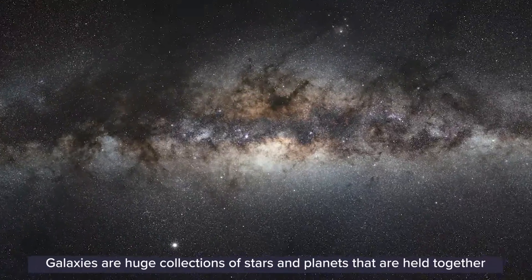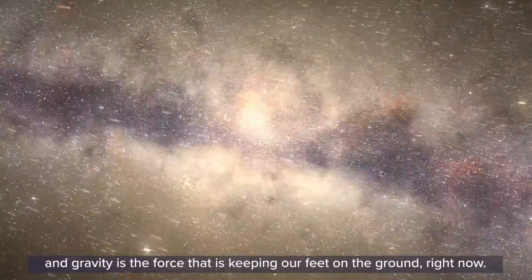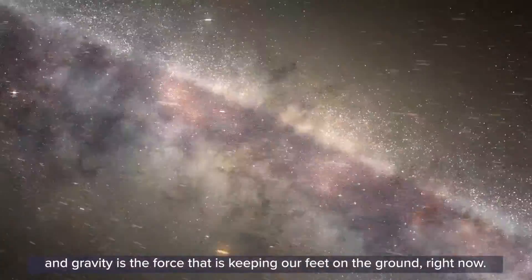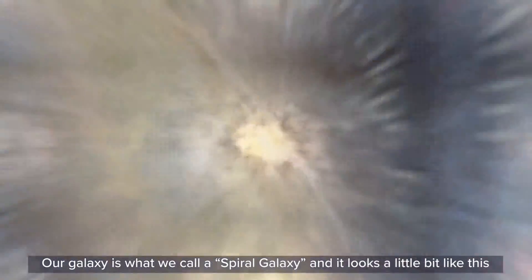Galaxies are huge collections of stars and planets that are held together by gravity. And gravity is the force that is keeping our feet on the ground right now. Our galaxy is what we call a spiral galaxy and it looks a little bit like this.